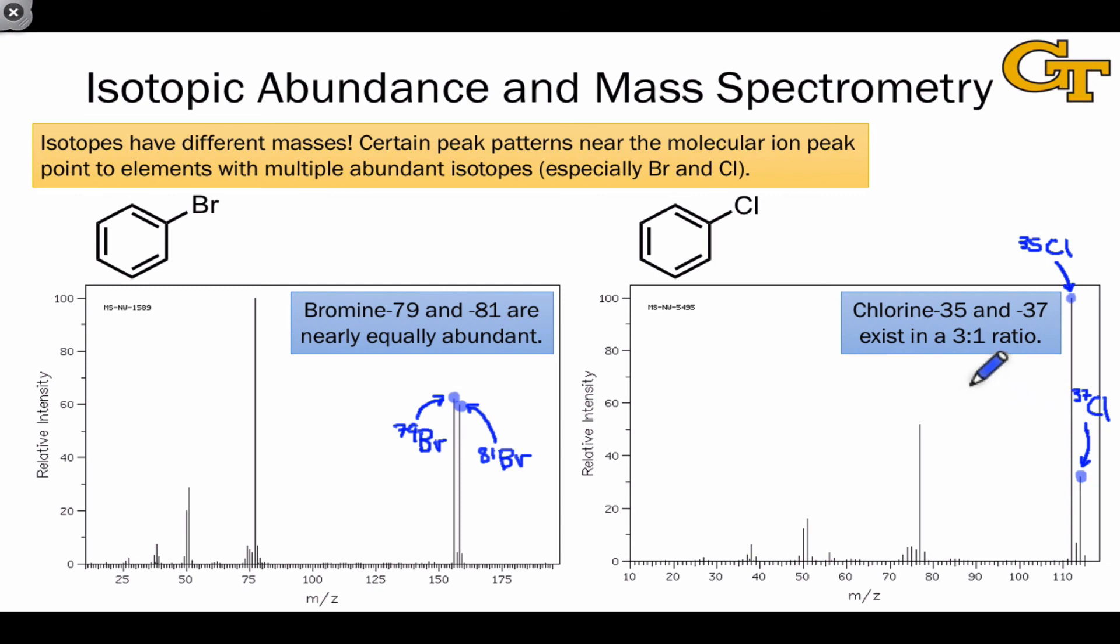For molecules containing multiple chlorines, we once again see a statistical pattern in the observed masses near the molecular ion. But because the probability of observing chlorine-35 is 75% and the probability of observing chlorine-37 is only 25%, the statistics here are somewhat more complicated.